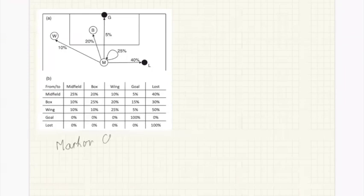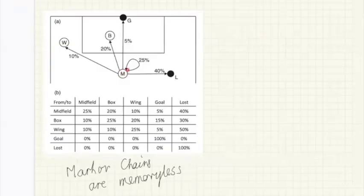Markov chains model football with one very specific assumption: that they are memoryless. What this means is that if we have the ball in midfield, and we pass it out to the wing, then the fact it's now on the wing is not affected by the fact it was in midfield before.